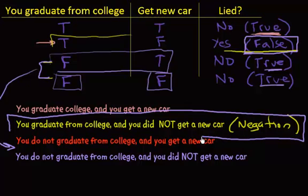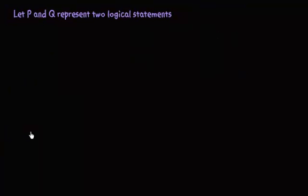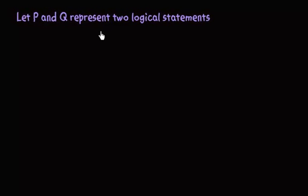But let's go over exactly how you negate an if-then. Okay, first, let p and q represent two logical statements. Okay, we're going to make an if-then statement from these two. Okay, very easy if-then. It doesn't really matter what p and q are. Okay, they're just two logical statements.